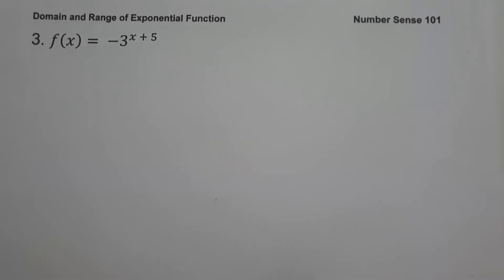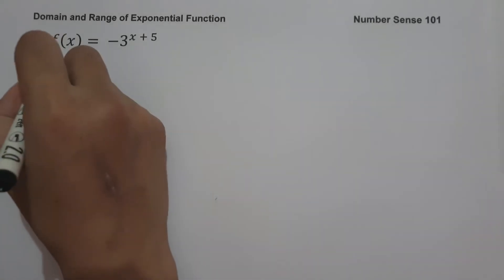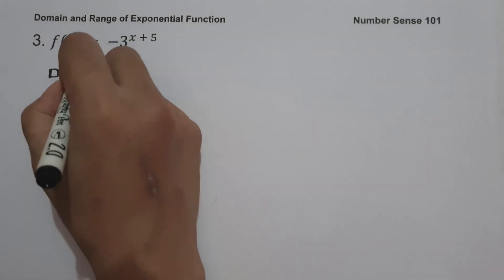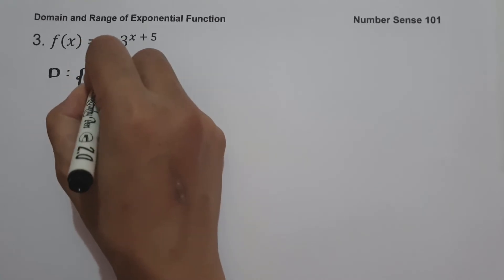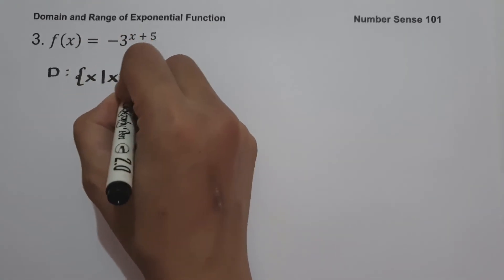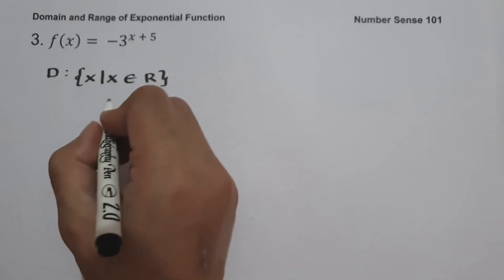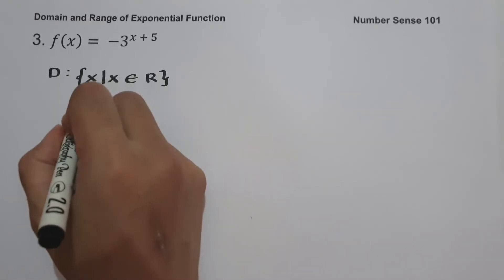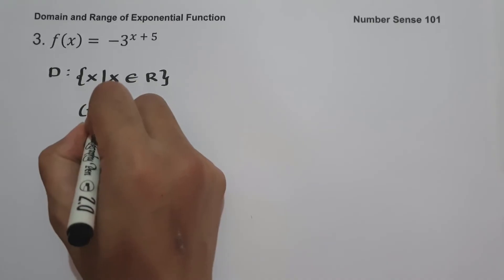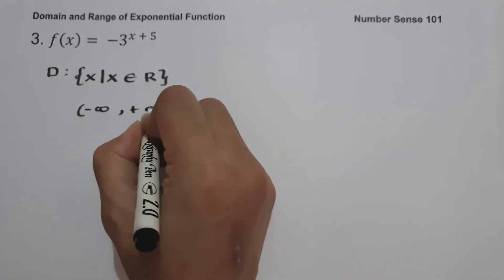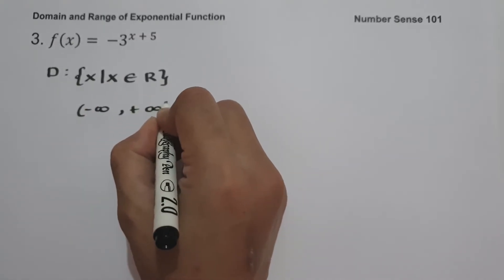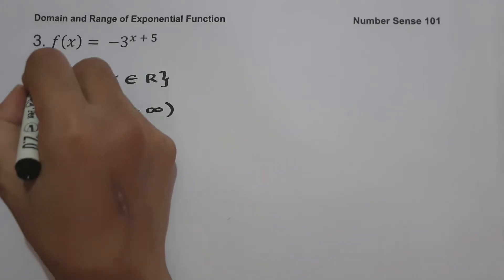On example number 3: f(x) = negative 3 raised to x plus 5. The domain is the set of x values such that x is the set of all real numbers, or in interval notation, from negative infinity up to positive infinity.